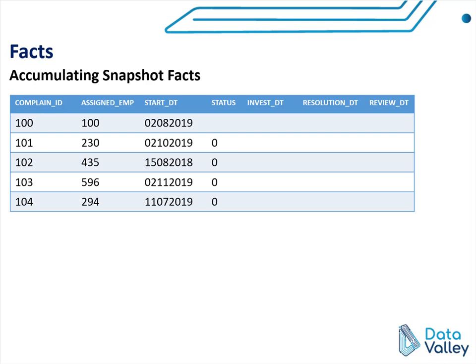For example, in this table here, we have a complaints fact table. In this table, we have complaint ID, which is a unique ID for this complaint, assigned employee ID, start date, and we have a set of columns representing the status or different stages for a complaint process.